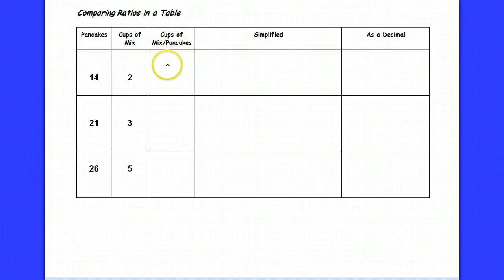Alright, let's take a look at the type of problem we did in class today. I'm going to look at making some pancakes. The box says that in order to make 14 pancakes I need 2 cups of mix.